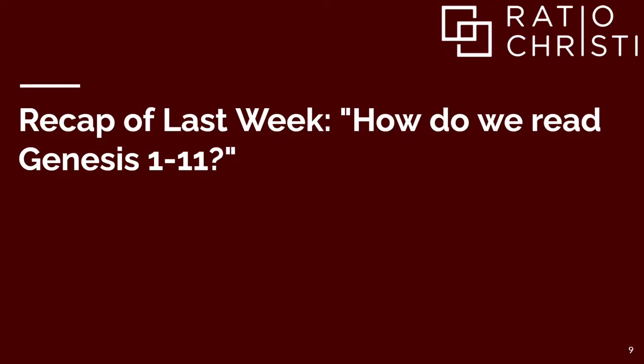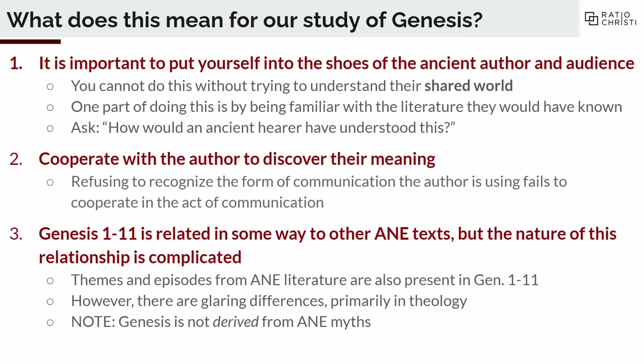Remember last week — we spent almost two hours on Genesis 1 to 11 and how to understand them in their context. Some of the takeaways were that in order to understand a text, it's important to put yourself in the shoes of the author and audience it was intended for. You have to cooperate with the author of the text to get to the meaning being intended. You don't get to place your modern presuppositions onto the text.